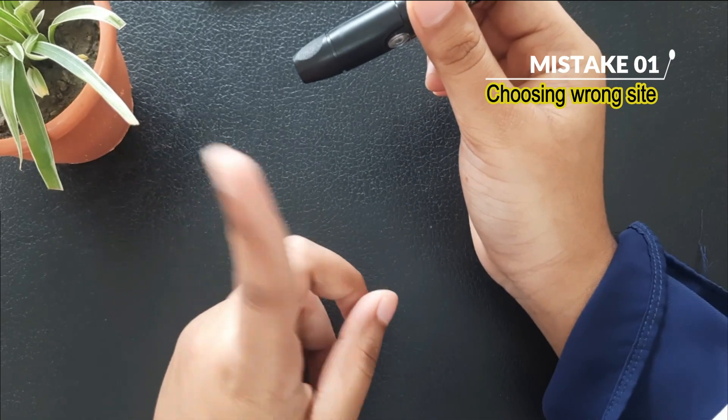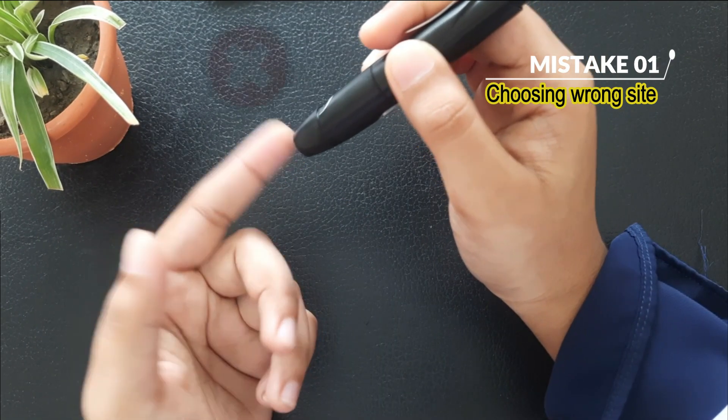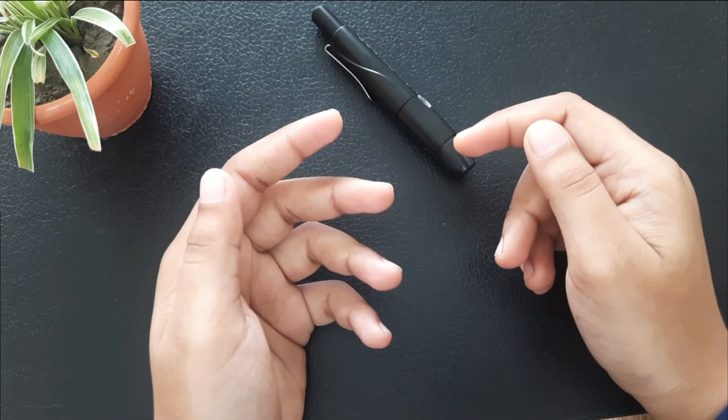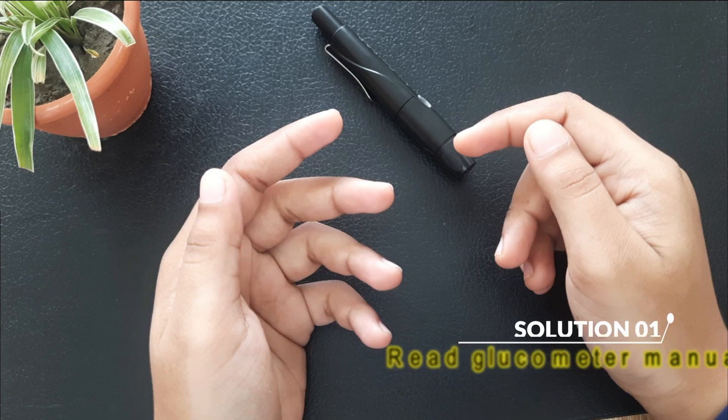Mistake 1: Choosing the wrong test site like tip of index finger. Solution is, read the glucometer's manual. It will list approved test sites.